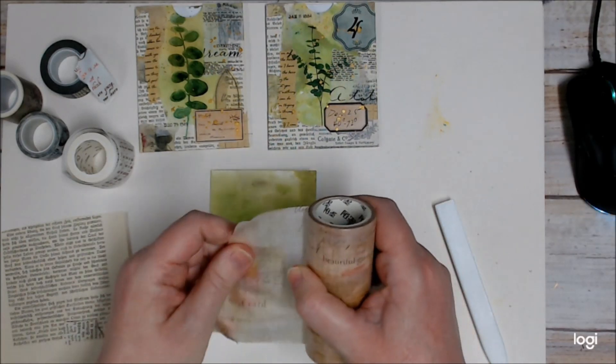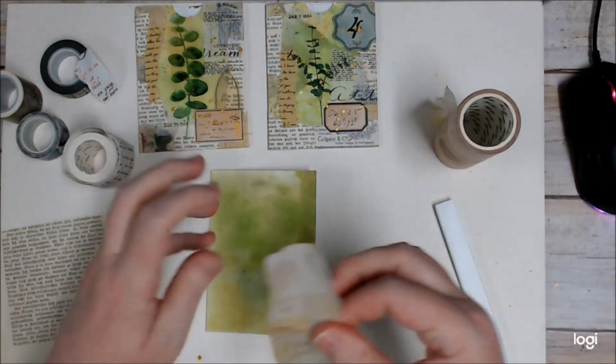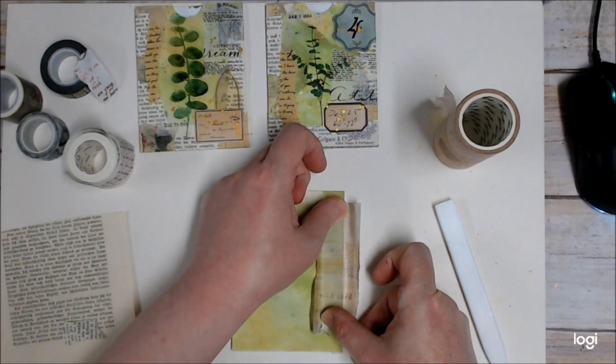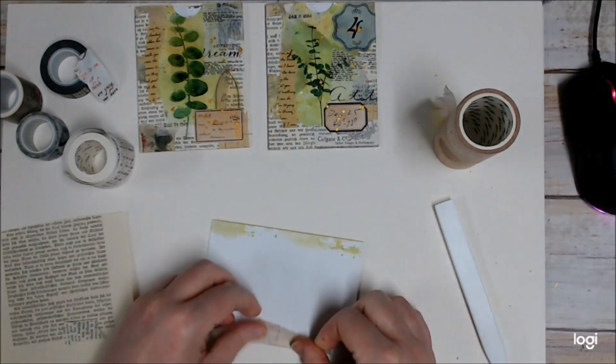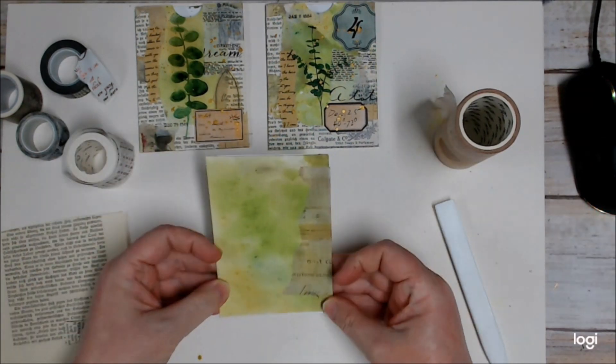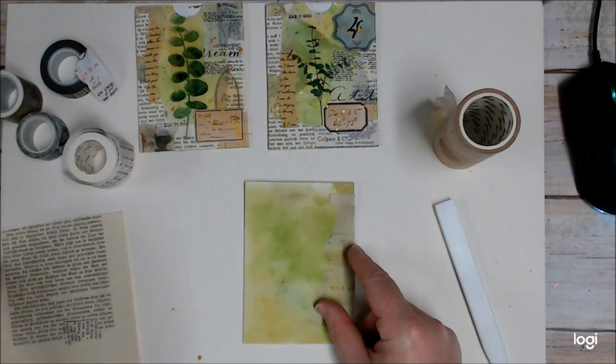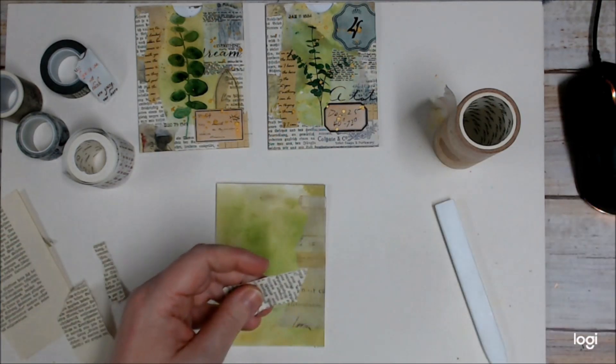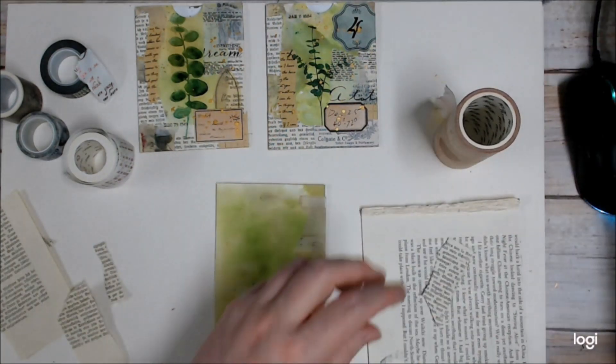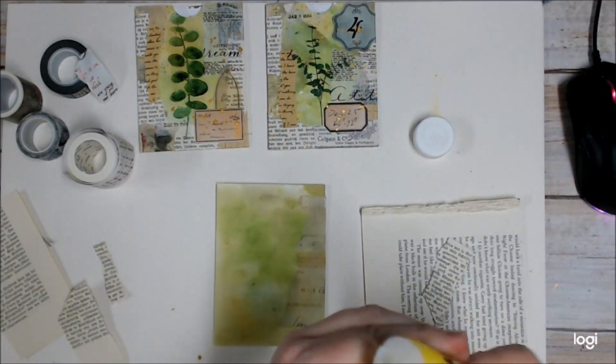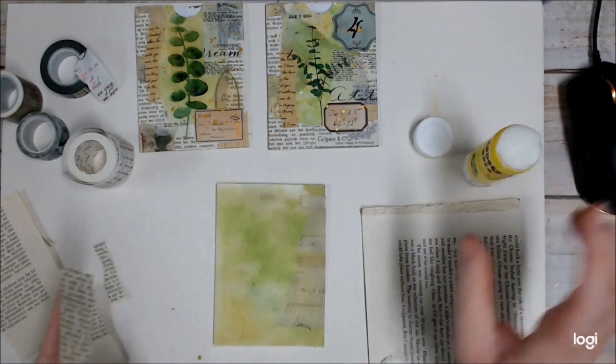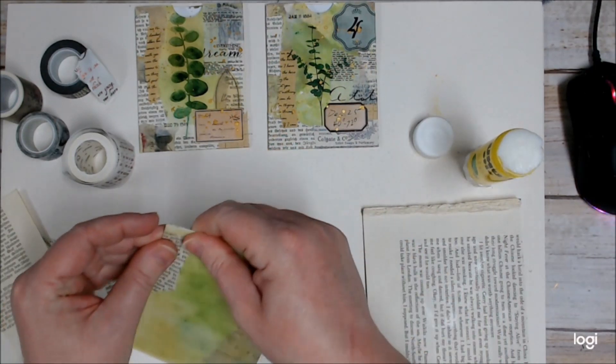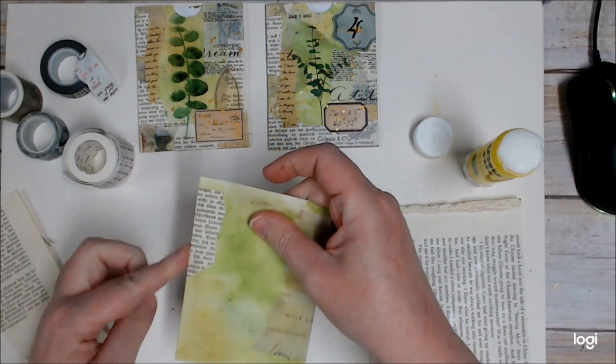So I'm just going to take a piece of this wide washi and I'm going to use that to seal this open edge of my pocket here. And I'm not going to worry that it doesn't go all the way to the top or all the way to the bottom. So that's closed that side of it now. So I might use some book page now just to add some variation.